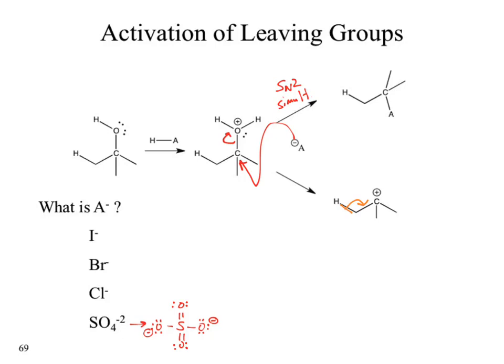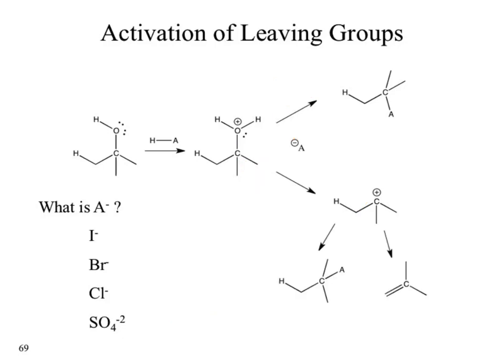When we talk about elimination reactions, they're typically referred to as beta eliminations. Why? The hydrogen being removed is coming from the beta position. So the name has some meaning and origin behind it. We could get our substitution or our elimination. There are also other hydrogens at beta positions on other carbons — those are all still beta eliminations, just a question of where the double bond forms.